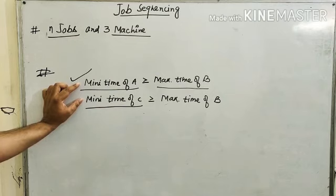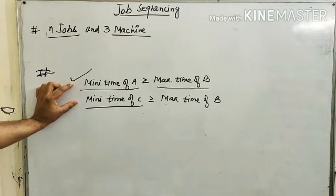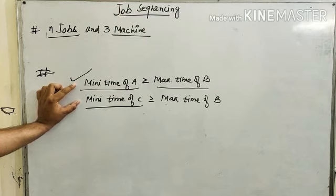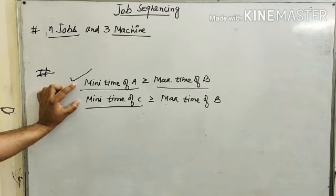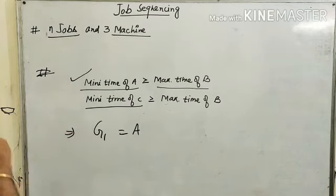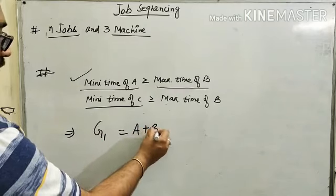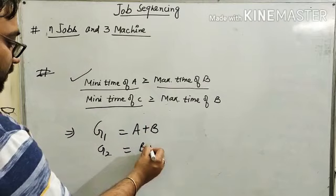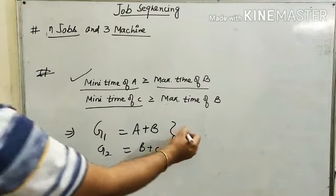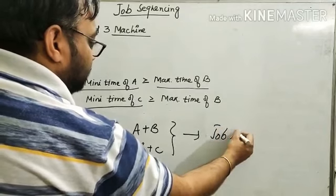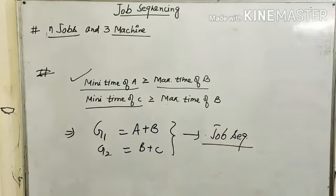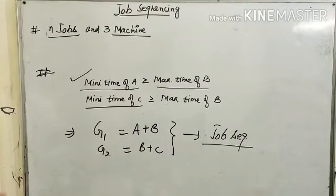This conversion is only to make the sequence. We can use the converted matrix only to form job sequencing, which can be defined by: G1 is equal to A plus B, and G2 is equal to B plus C. After making this, we make the job sequence, and then we find the minimum elapsed time. The condition remains: each job is performed in the same order — first M1, then M2, then M3.